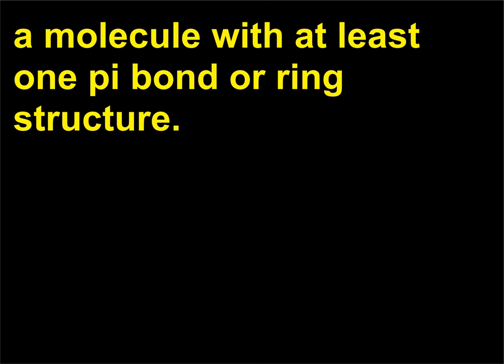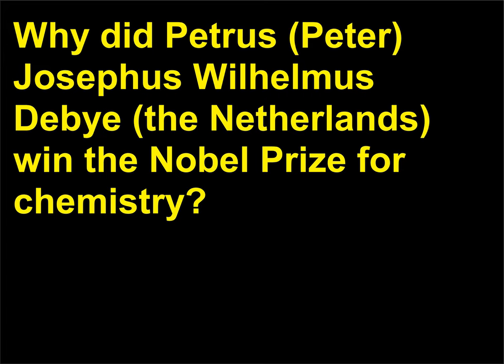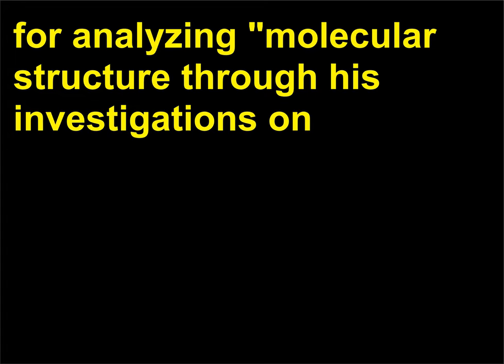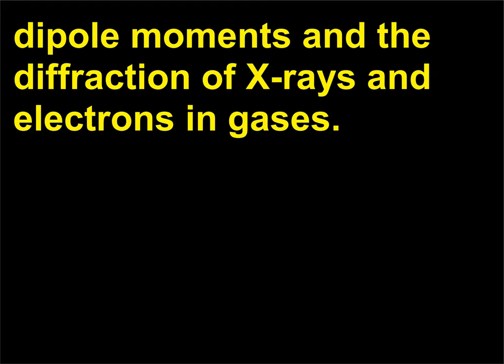Why did Petrus (Peter) Josephus Wilhelmus Debye, the Netherlands, win the Nobel Prize for Chemistry? For analyzing molecular structure through his investigations on dipole moments and the diffraction of X-rays and electrons in gases.